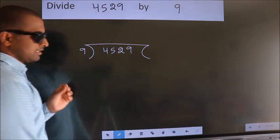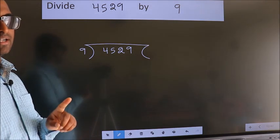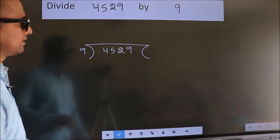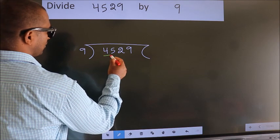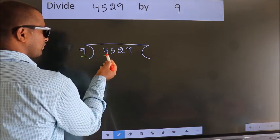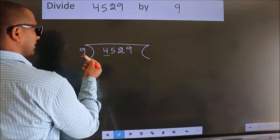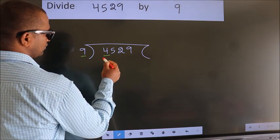This is step 1. Next, here we have 4, here 9. 4 is smaller than 9, so we should take 2 numbers: 45.